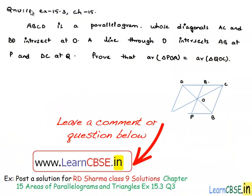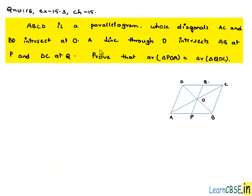Now, let us solve question number 16, exercise 15.3 from chapter 15. ABCD is a parallelogram whose diagonals AC and BD intersect at O. A line through O intersects AB at P and DC at Q. Prove that area of triangle POA is equal to area of triangle QOC.